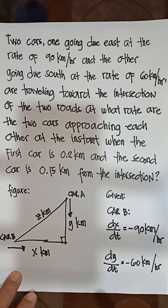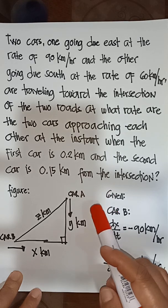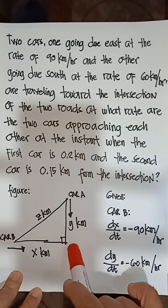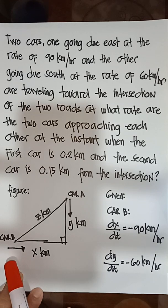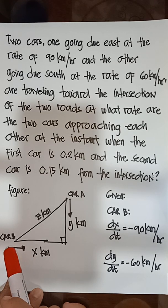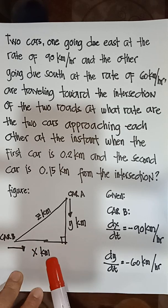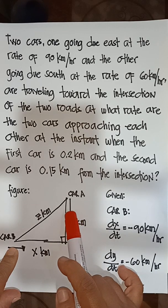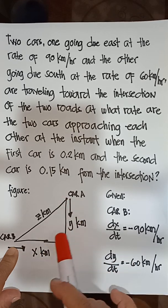From our illustration here, car A is going due south — that is 90 degrees. The other one, car B, is going due east — that is 0 degrees. And the two cars are traveling toward the intersection.